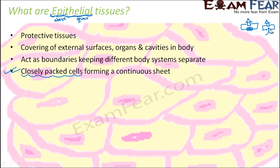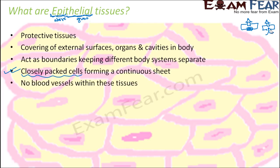For example, there is an excretory system whose job is to collect all the waste materials of the body and throw them out. Now what will happen if you have a leaky boundary to the heart? These waste products present inside the body will start entering into the heart, damaging it. That is why, in order to prevent any kind of leakage, the epithelial tissues are closely packed cells with very little intercellular space or intercellular material.